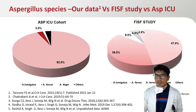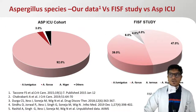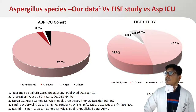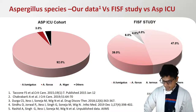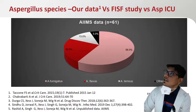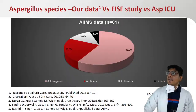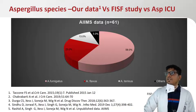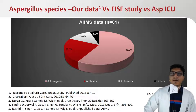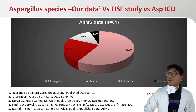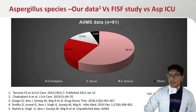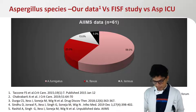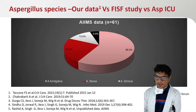Regarding species: in the ASPICU cohort and most Western literature, the predominant species is Aspergillus fumigatus. In the FISF study and our data, there is a significant proportion of non-fumigatus species including Flavus and Tereus. This has an impact on therapy, since Flavus has higher MICs to amphotericin, and Tereus is inherently resistant to amphotericin.